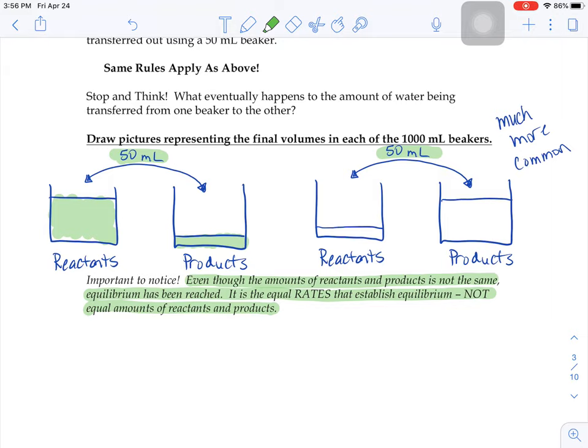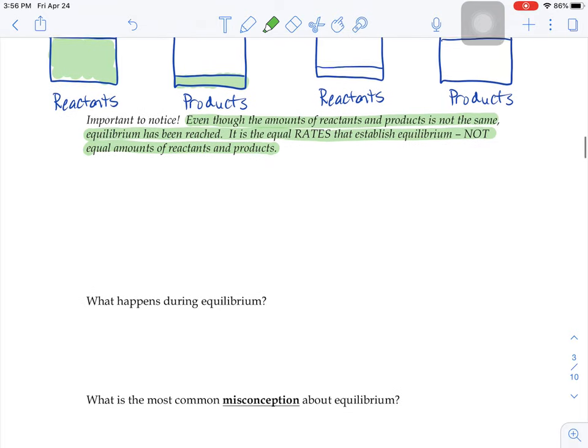So again, it's not the amount in the big beakers, the reactants beaker, the products beaker. It's the amount that's being passed back and forth. That's the thing that has to be the same for it to be at equilibrium.